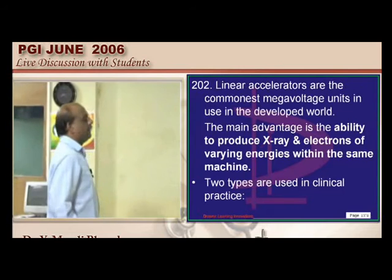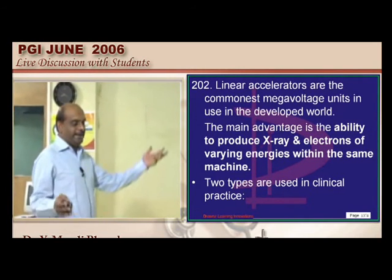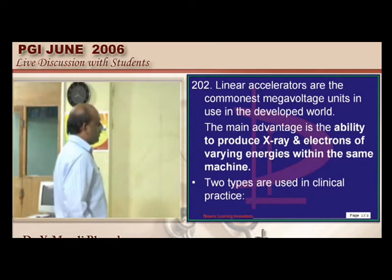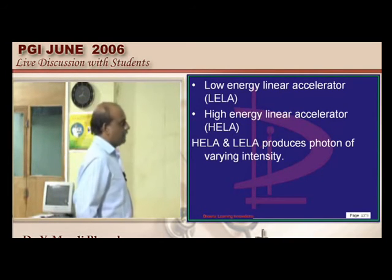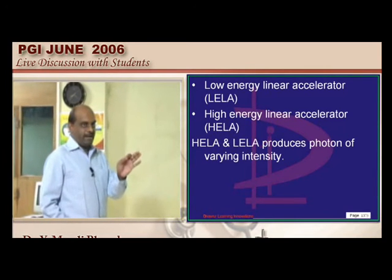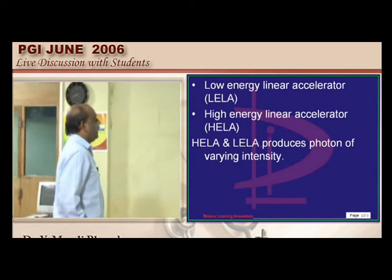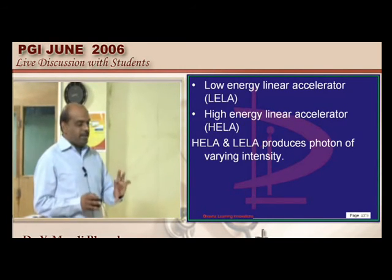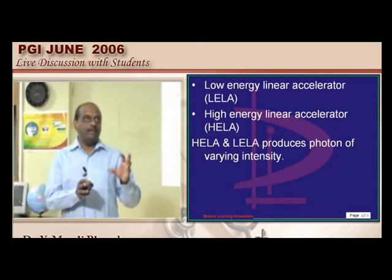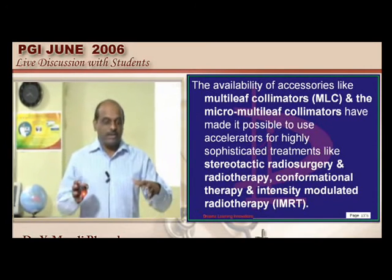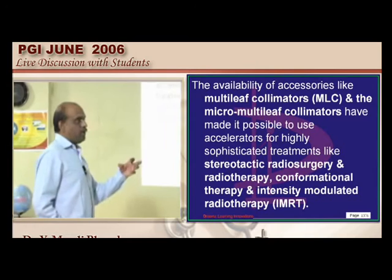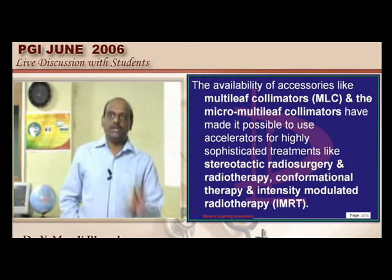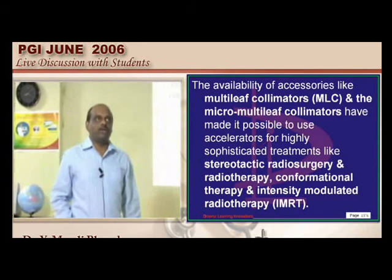The linear accelerator operates at megavoltage, producing X-rays and electrons with high energy. There is HELLA (high energy linear accelerator) and LELLA (low energy linear accelerator). Linear accelerators are used in stereotactic radiosurgery requiring high energy beams, and also in Intensity Modulated Radiotherapy (IMRT), where only certain areas of malignancy receive specific proportions of radiation so normal tissues are spared.